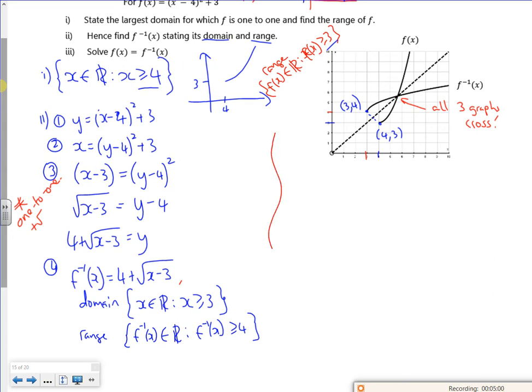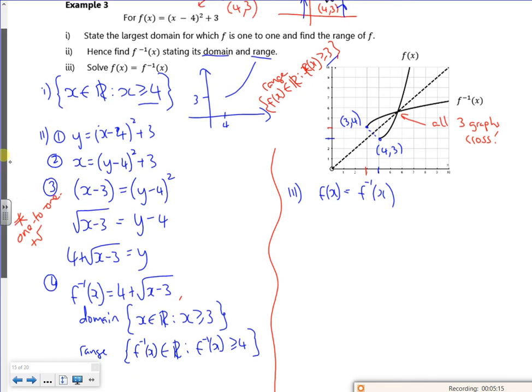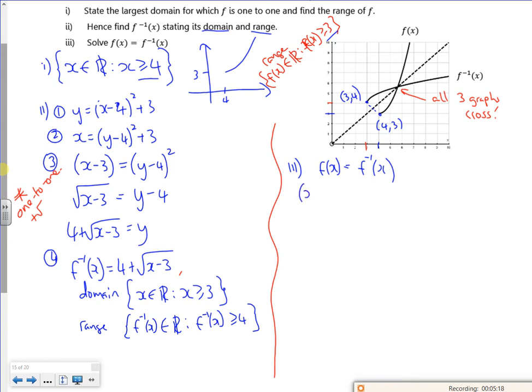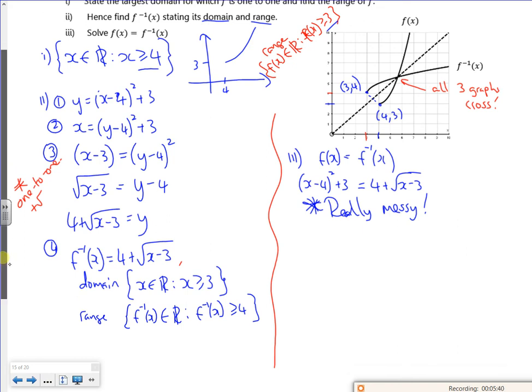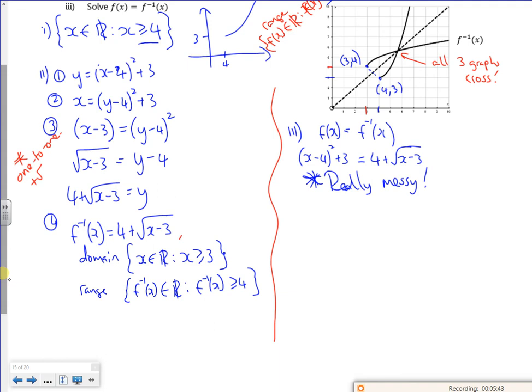So for part 3, I've got to look where f of x is equal to the inverse. x minus 4 squared plus 3 is equal to 4 plus the square root of x minus 3. That is really messy. And to be fair, for the stuff that we do for solving, we can't do it. So I choose the easiest one of the two and put it equal to x.